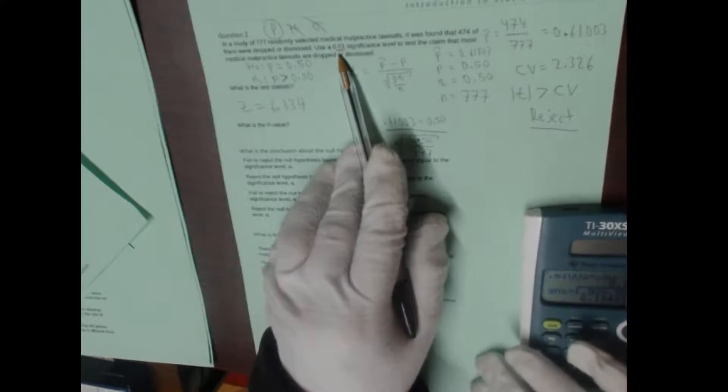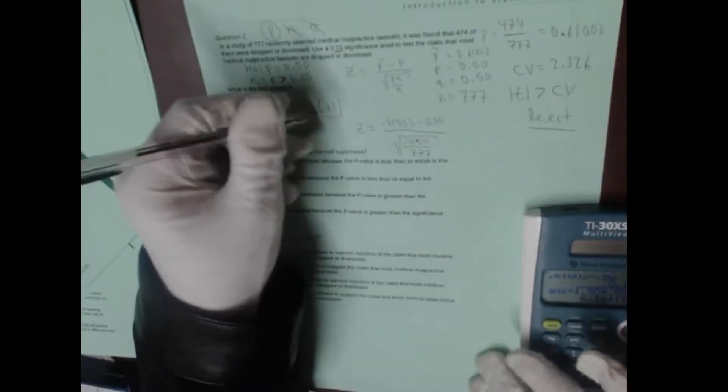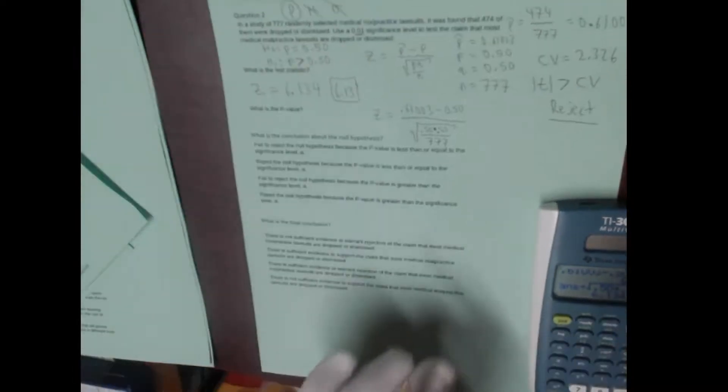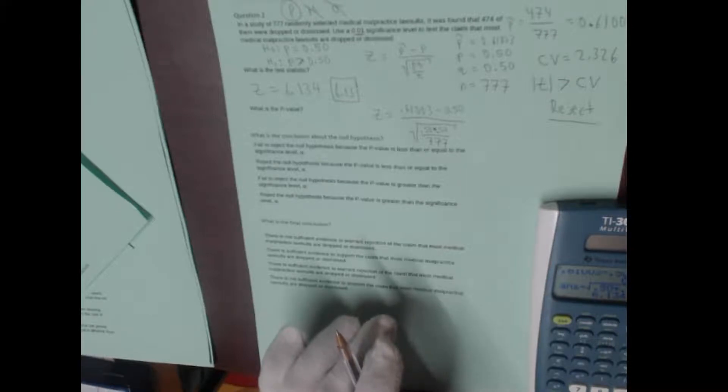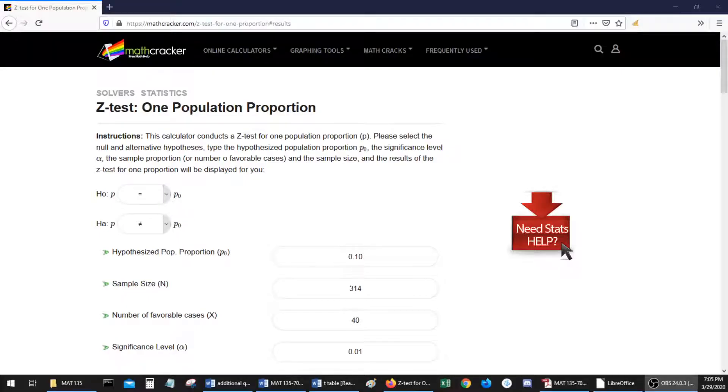Unfortunately, oh, I'm sorry. It should actually, yeah, 6.13. The book wanted you to round to two decimal places, so the book was looking for 6.13, which is fine. Okay, let's use technology to find the p-value. So, give me one second to refresh the page. I'm going to go back to the website where we find the p-value, and let's just refresh this.